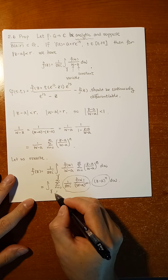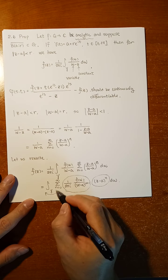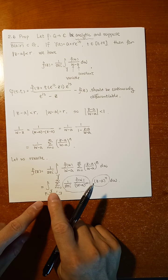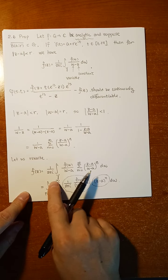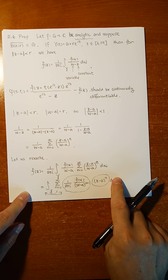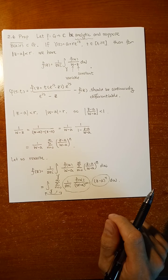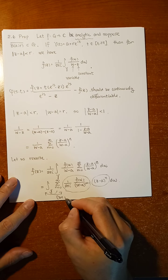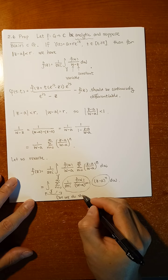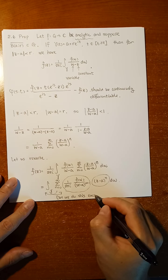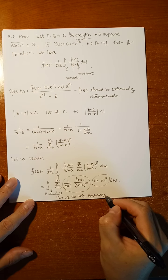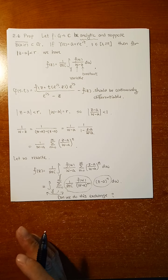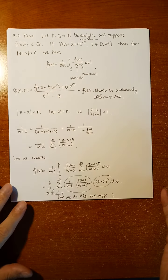What we want is to exchange the sigma with the integral. If we can do this exchange, then we will have F(z) equal to sigma of something, which is a genuine power series. The question is: can we do this exchange, and do we need additional conditions? That is addressed by Lemma 2.7.